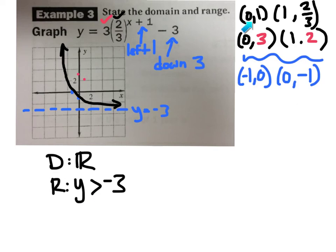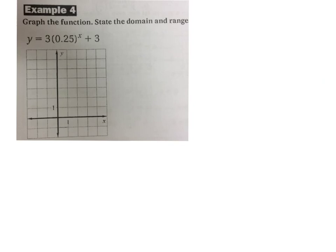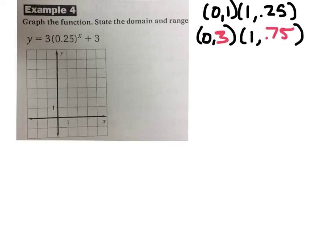So, just going through those steps, do 0, 1, 1, B, multiply the y values by A, and then shift them based on your H and K. Let's try it one more time. Here we have 3 times 0.25 to the x plus 3. So, what's the base? What's B for my 0, 1, 1, B? 0.25. And then I take those B's and I multiply them by A, or the y values, and I multiply them by A. What's the A value? So, I've got 0, 3, 1, 0.75. So I'm going to plot those points. 0, 0, 3. I can actually touch the axis here. And 1.75.